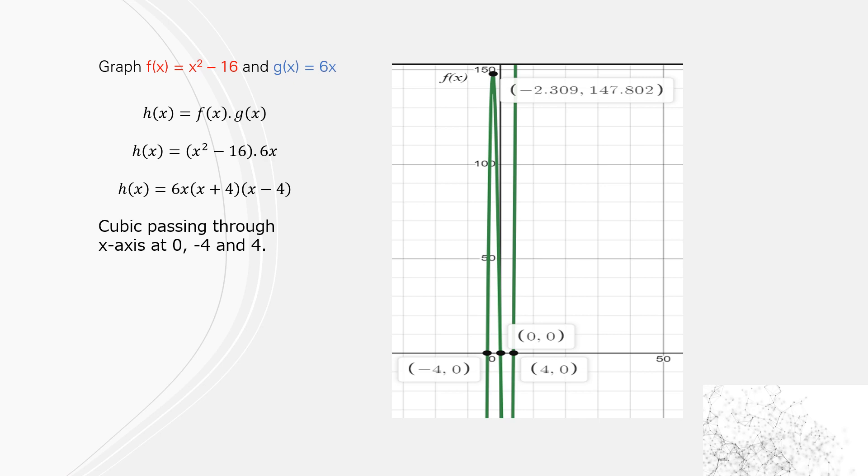So solving this cubic, the multiplication of two functions, you get (x² - 16) × 6x. Put the 6x out the front and factorize the difference of two squares, meaning we have our cubic passing the x-axis at 0, -4, and 4. As you can see, the turning point—this is something that's discussed in HSC mathematics, how you find the turning point. So we won't look at that in this video. But Desmos has helped us with where that turning point happens to be.